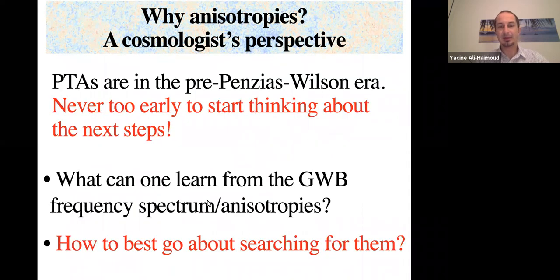So PTAs are basically in the pre-Penzias Wilson era. We still haven't detected even one single number about the stochastic nanohertz gravitational wave background. But it's never too early to start thinking about the next steps. So the next steps are, first of all, we want to think about what can we learn in terms of the physics and the focus of this talk and of this work is how to best go about to search for these properties beyond the overall amplitude of the stochastic gravitational wave background.